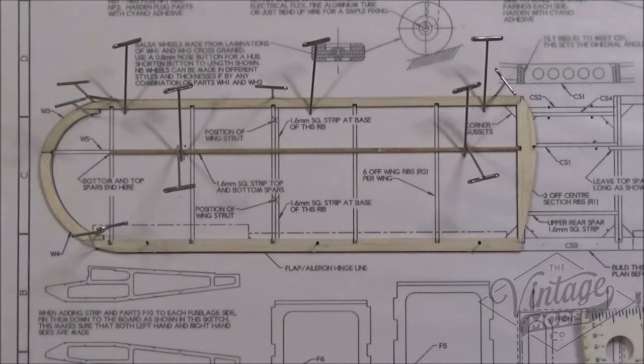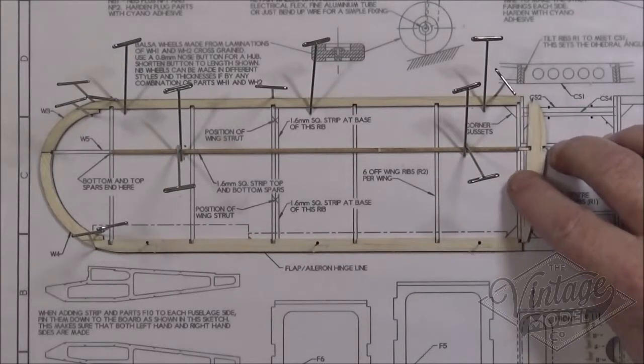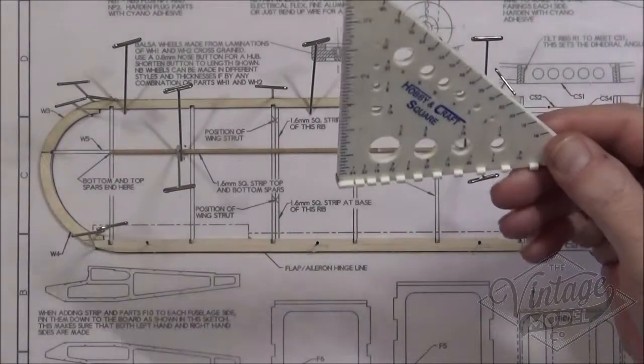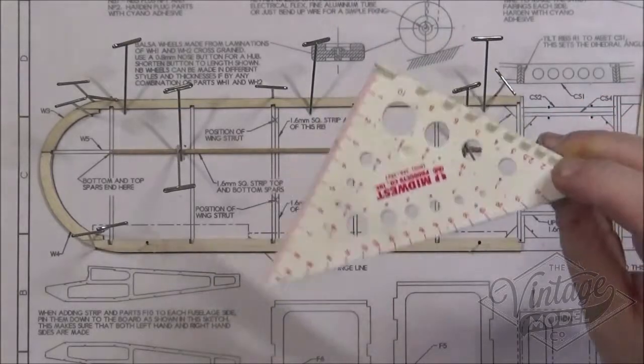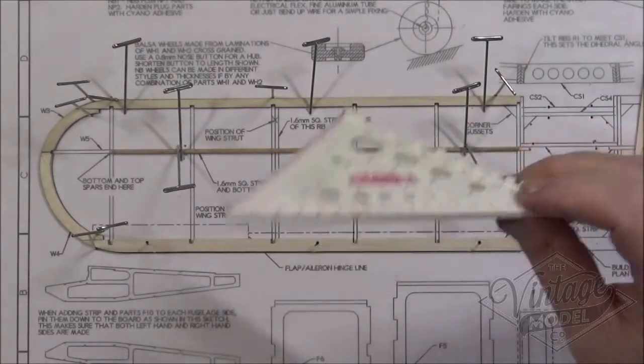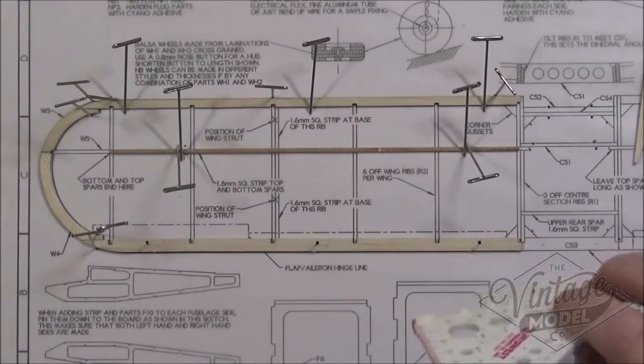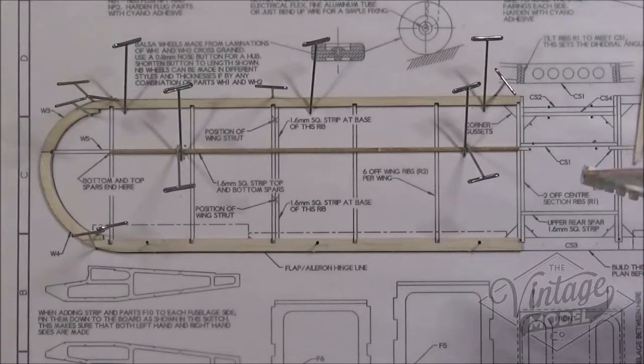I think I'm going to leave that for the glue to set. I'm now going to get on and start fitting the ribs. And for this you're going to need a modeler's square or some other form of square just to make sure that when you put the ribs in they are lined up. So I think I'll just get on.